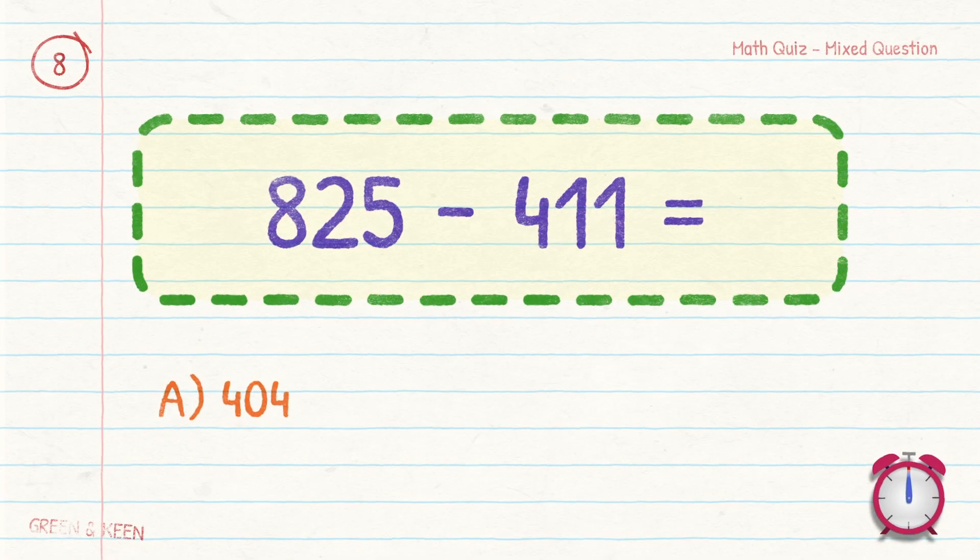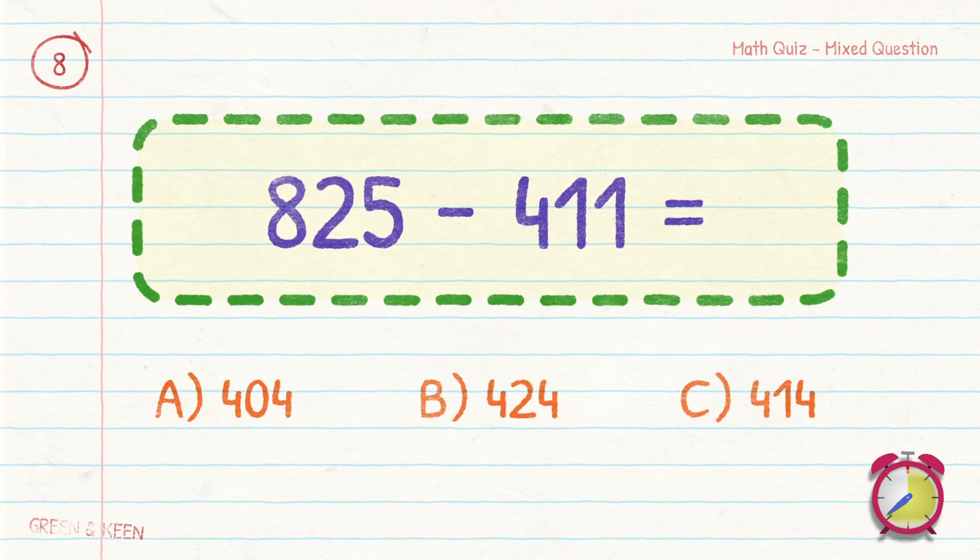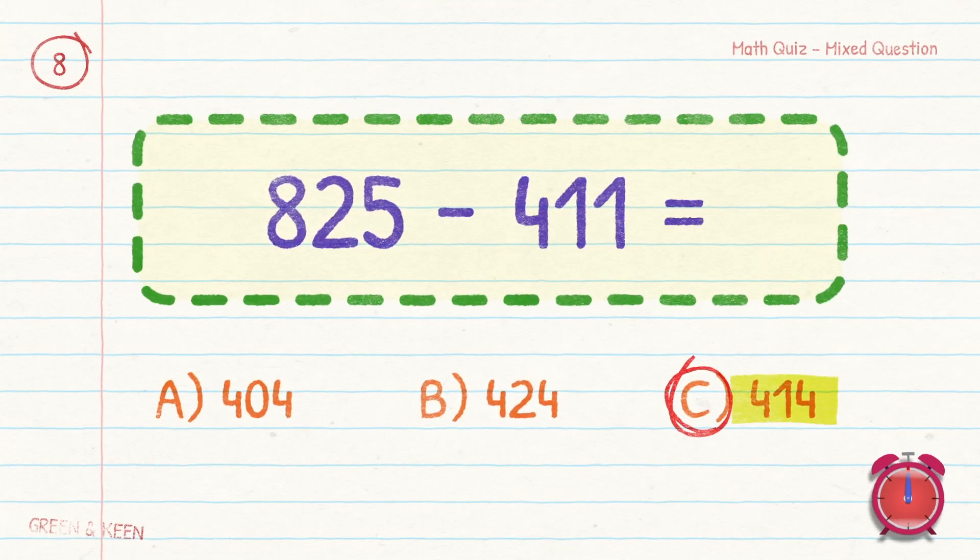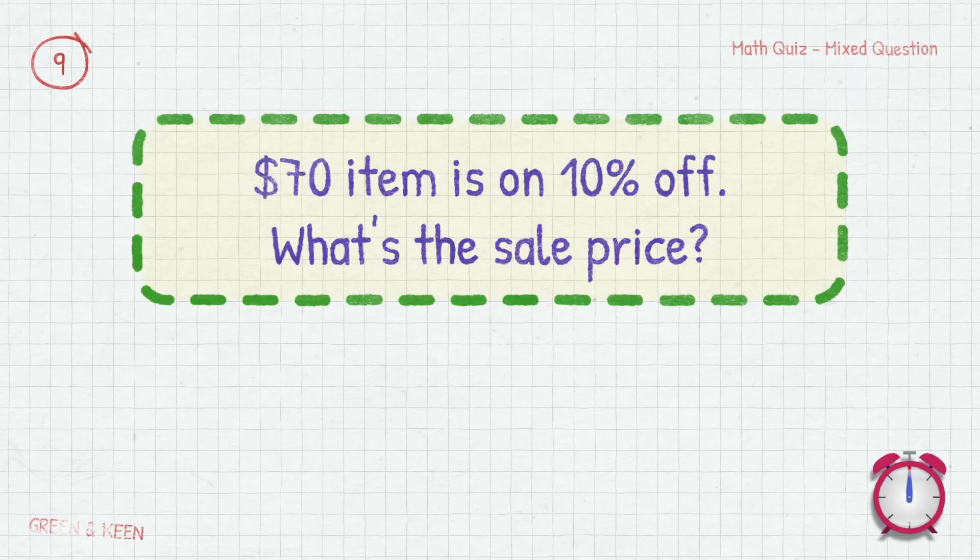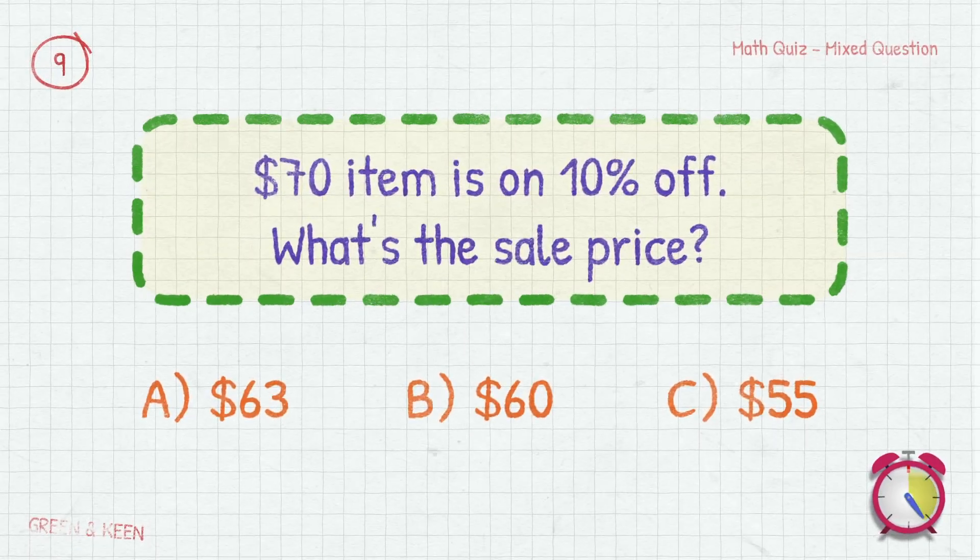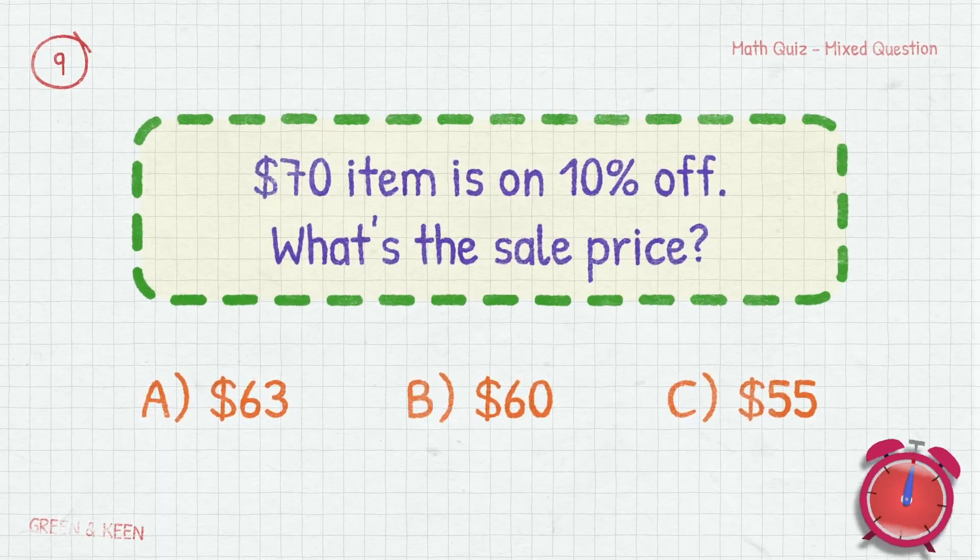825 minus 411 equals? 414. A $70 item is 10% off. What's the sale price? $63.